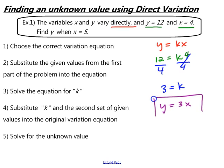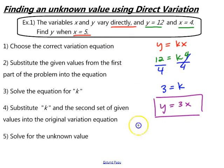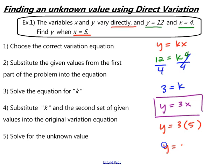This is the equation that relates the variables. Now, for the second part of the problem — find y when x equals 5 — we use the equation y equals 3x and substitute x equals 5. So we substitute k and the second set of given values into the variation equation: y equals 3 times 5. Then we solve for the unknown value: y equals 15.